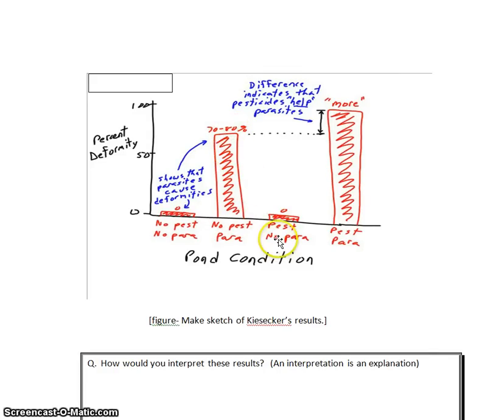Now let's look over here in these last two conditions. In the ponds with pesticide, but no parasites can get into the cage because of the small holes, zero percent deformity. Again, where there's no parasite, no deformity, even if there is pesticide present.